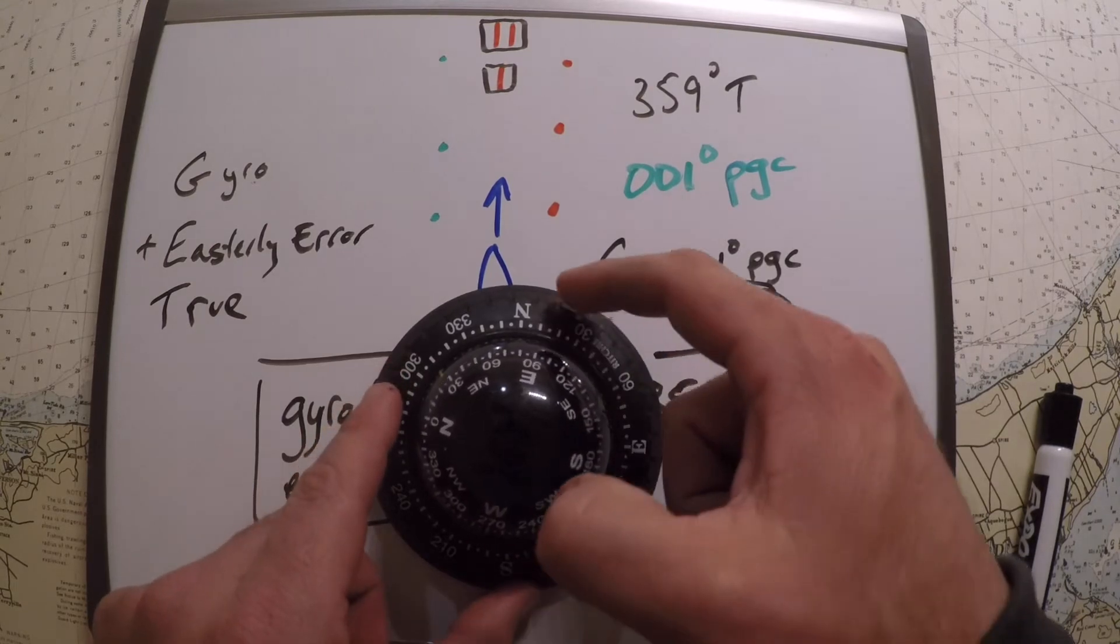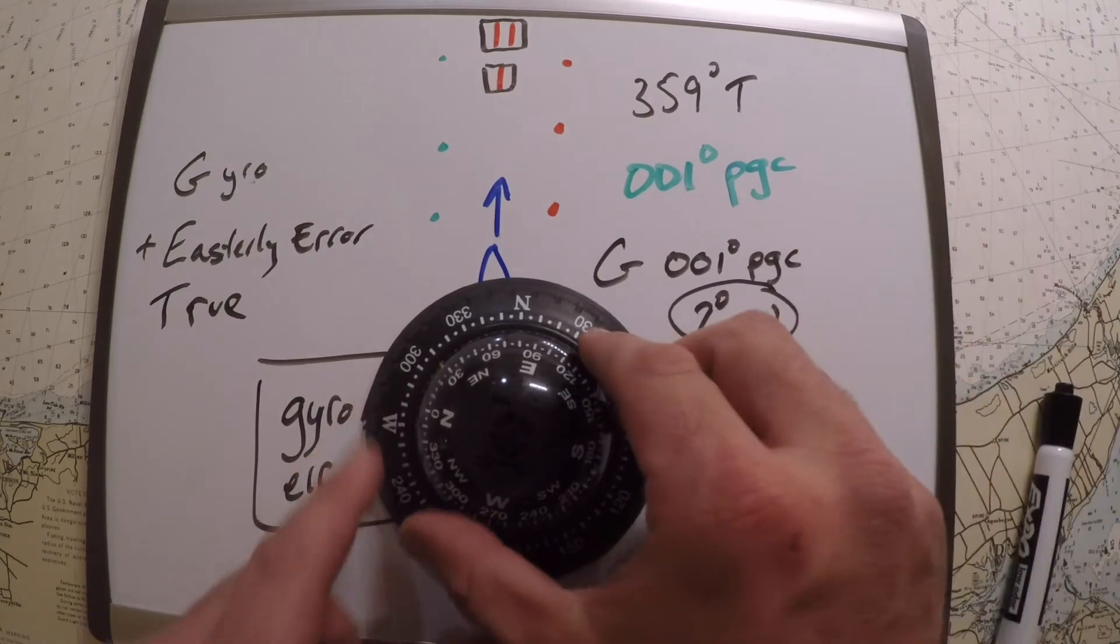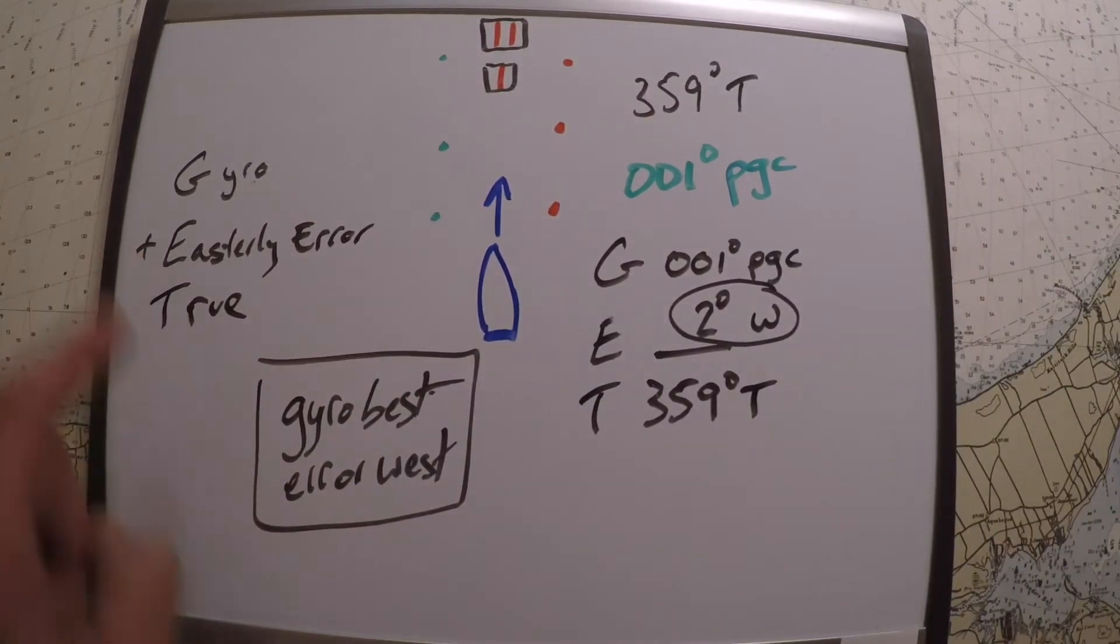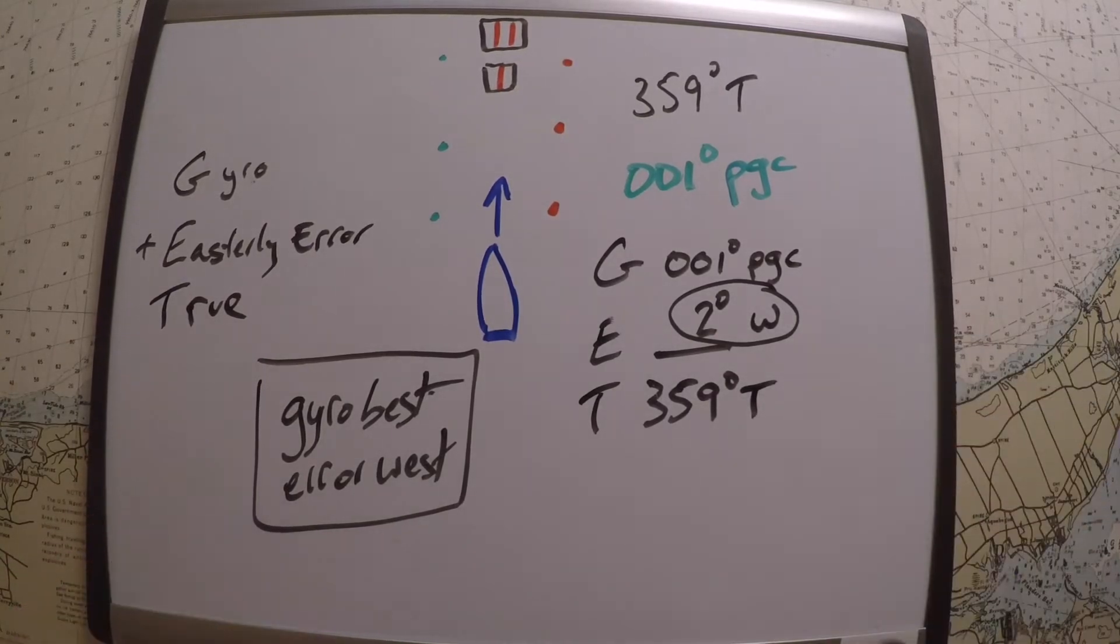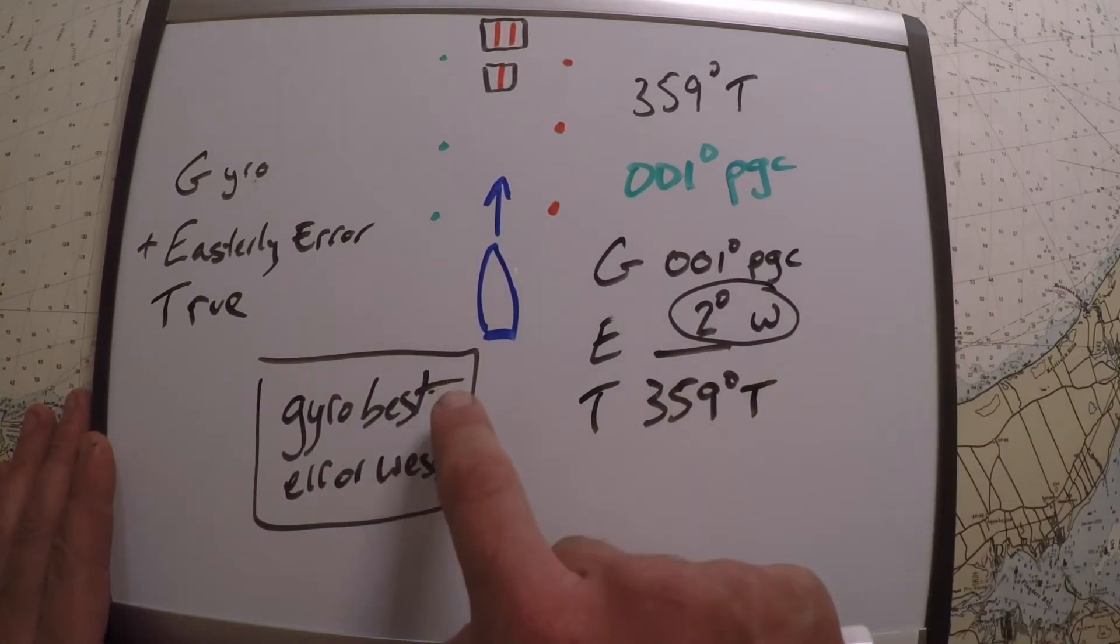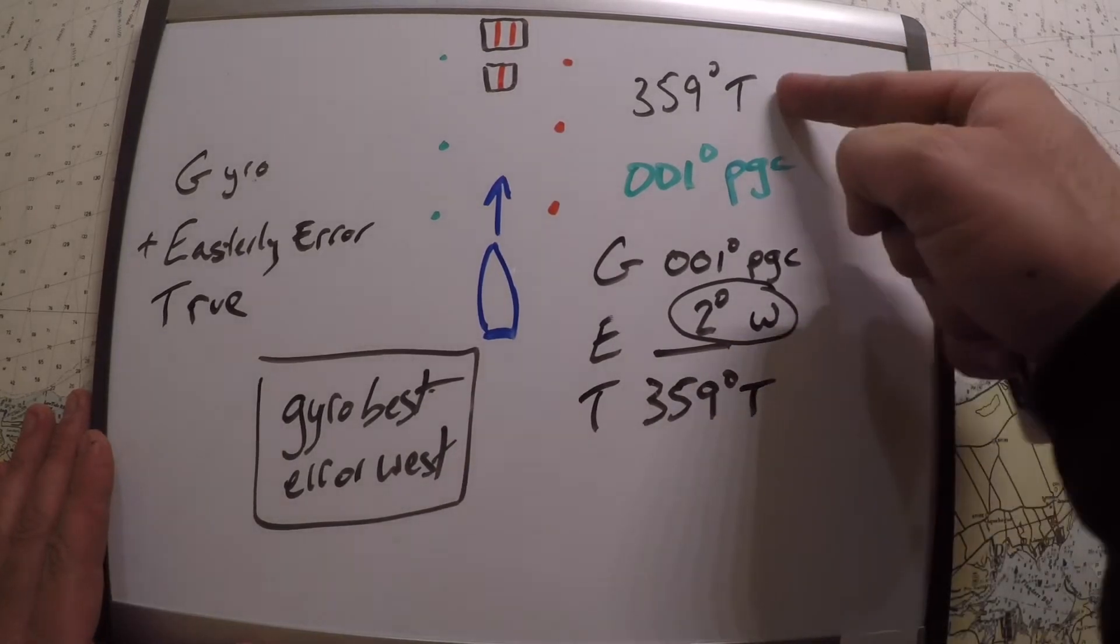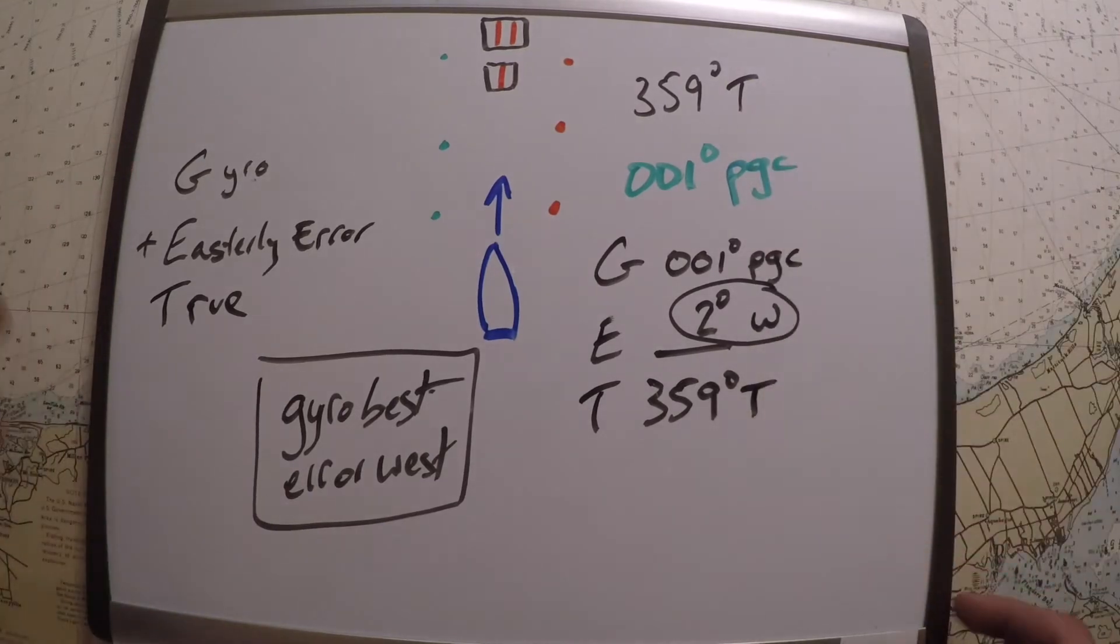001 is to the right of 359. It's better, it's a little bit higher on the list, so that's why that memory aid is used. So either one of these will work, just don't get confused by the numerical value here. We're just talking about whether it's in essence higher or lower on the compass scale. Either way you would get it. In this case, the gyro is best, the error is west, right? The gyro is higher than the true value, so the error would be west.